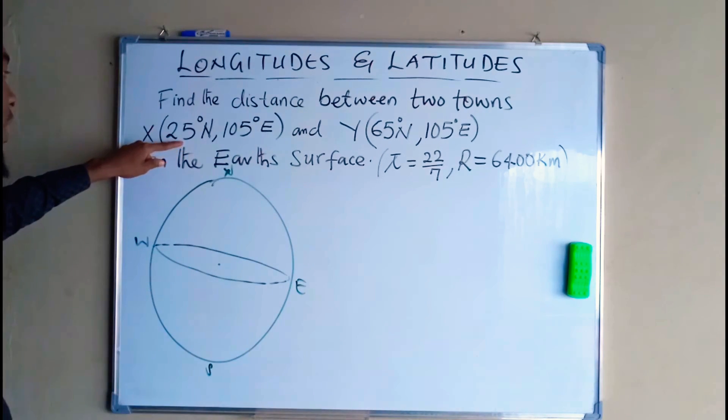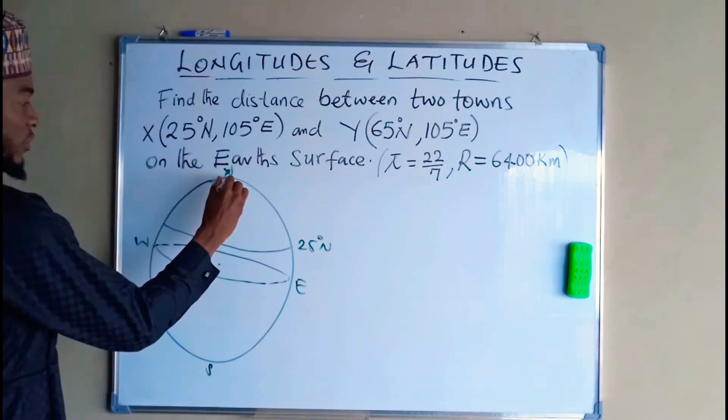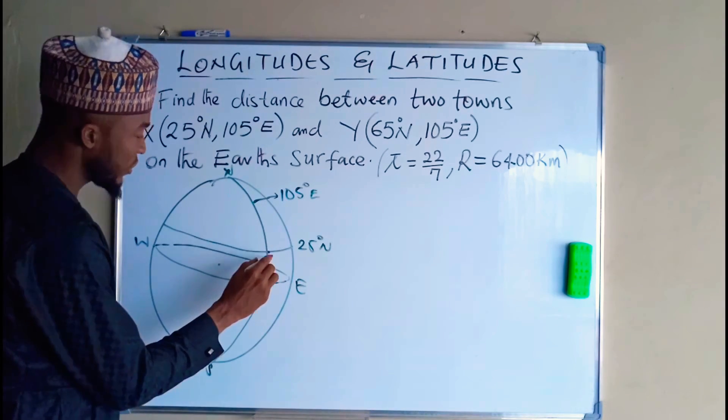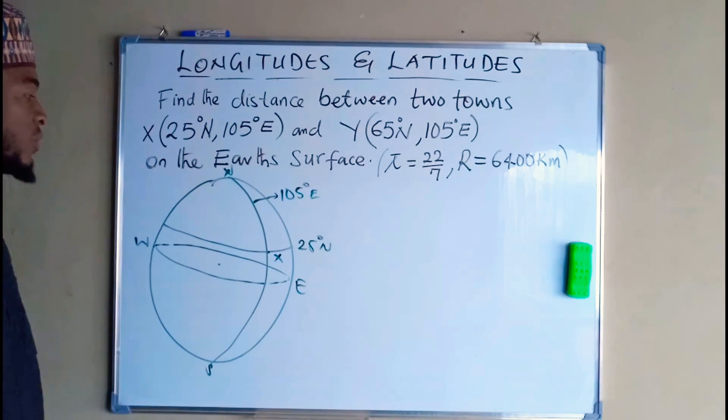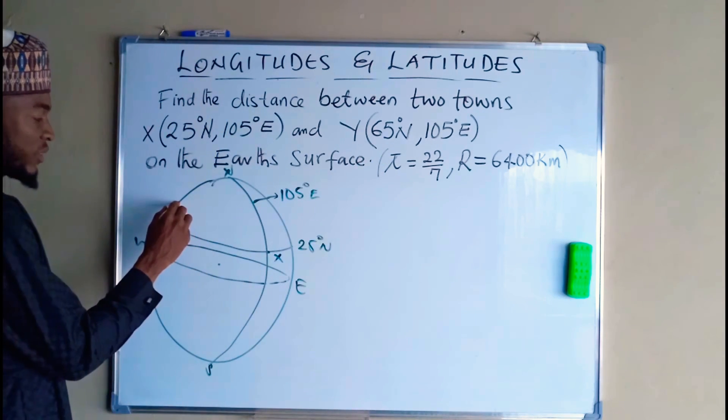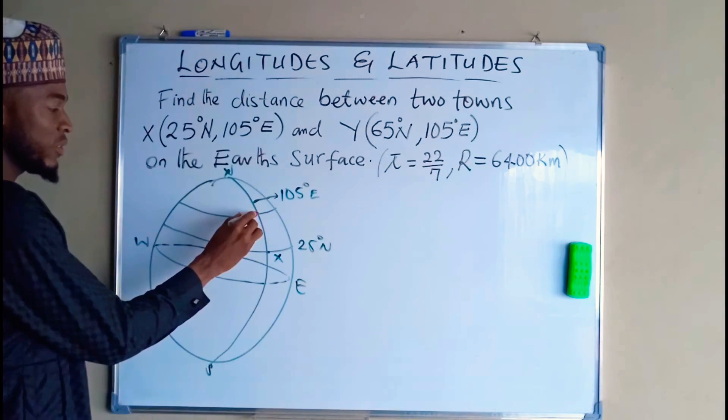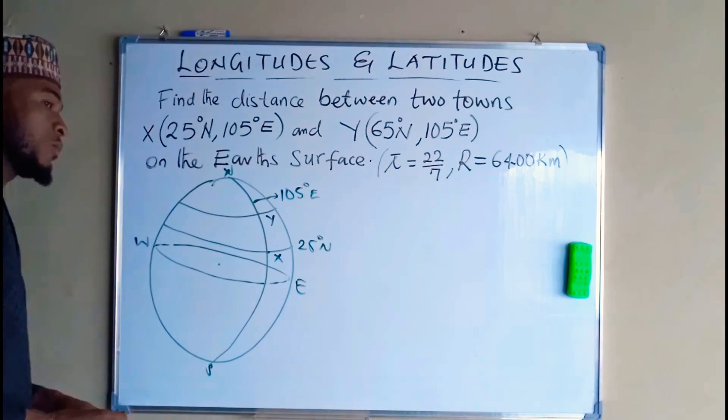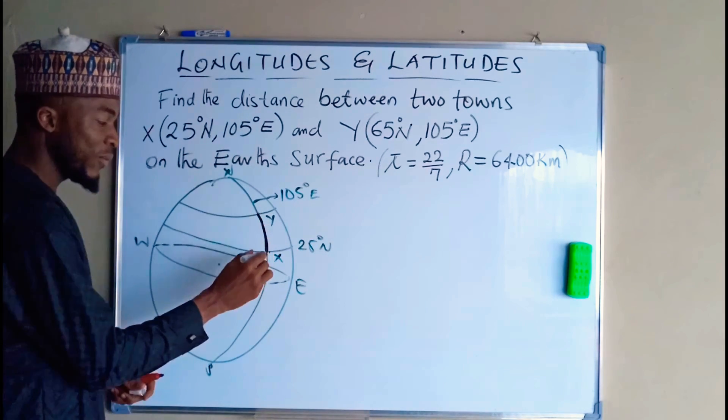The first town is on the latitude 25 degrees north and longitude 105°E. This is the intersection, this is town X. Therefore town Y which is 65 degrees north is also towards north direction, all on the same longitude. So this is the point of intersection, this is town Y. We are asked to find the distance between Y and X. This is the distance we are looking for.